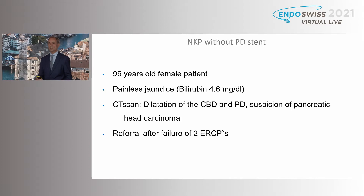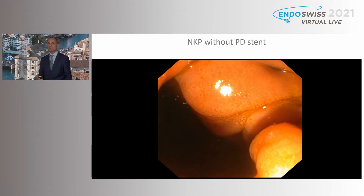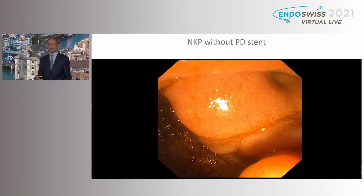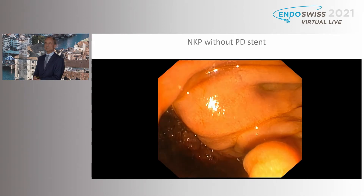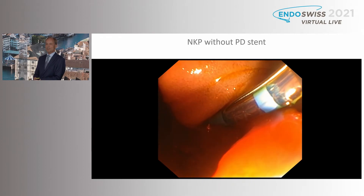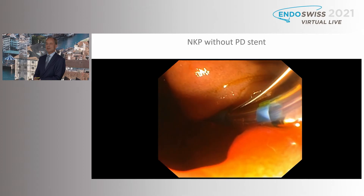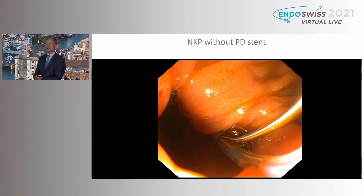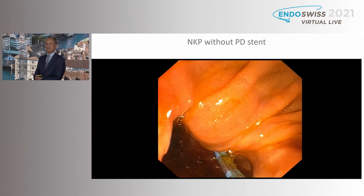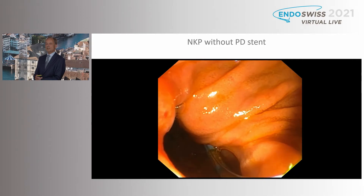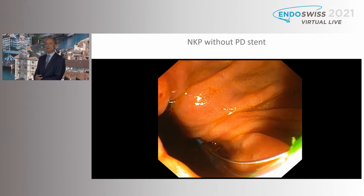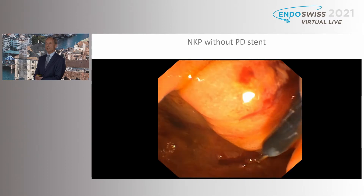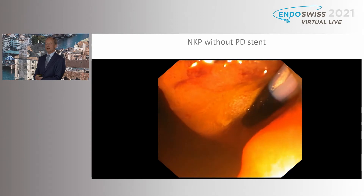A case: 95-year-old female patient with painless jaundice — a candidate for palliative drainage, suspicion of pancreatic head carcinoma, referred after two failures of ERCP. As you can see, the papilla is located inside the diverticulum. I tried first to get the tip of a standard sphincterotome into the orifice and then by bending the sphincterotome to pull the papilla towards the edge of the diverticulum, but I failed, and therefore I'm using the needle knife.